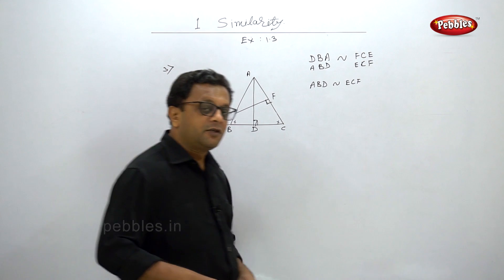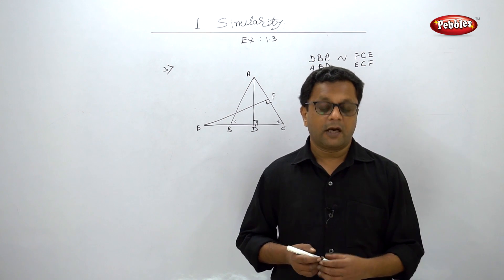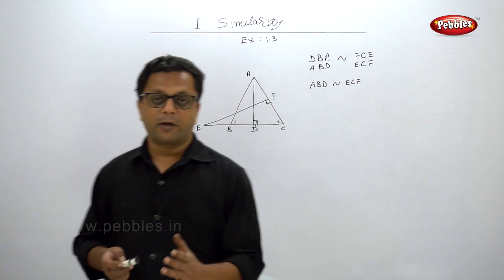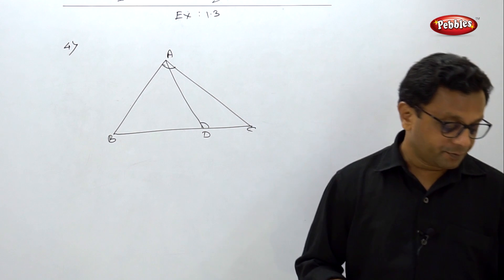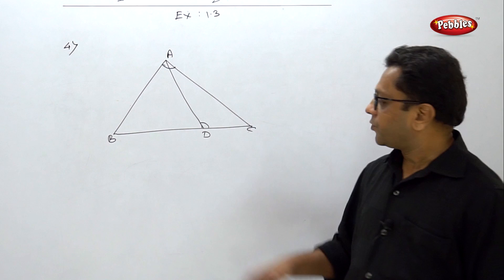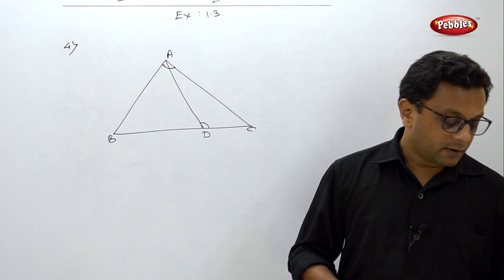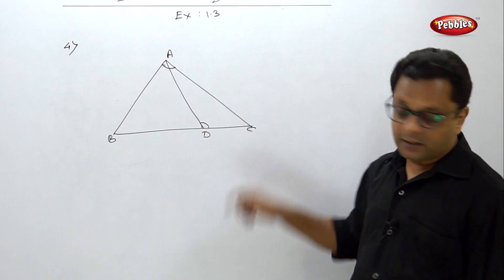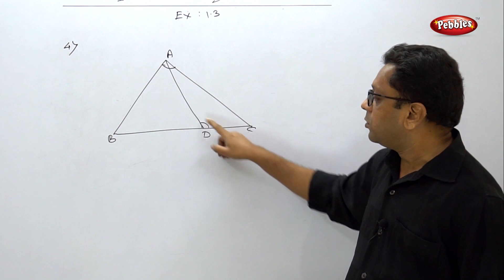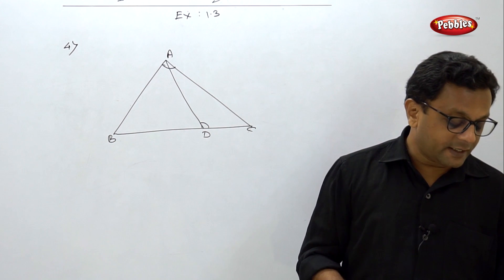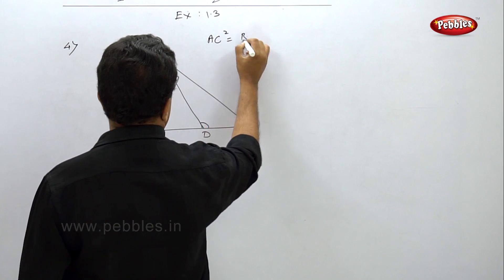Example number 4: D is a point on side BC of triangle ABC such that angle ADC equals angle BAC. We must prove that AC² = BC × DC. First, we prove that triangles ABC and ADC are similar. Angle A in the big triangle equals angle D in the smaller triangle, and angle C is common to both.